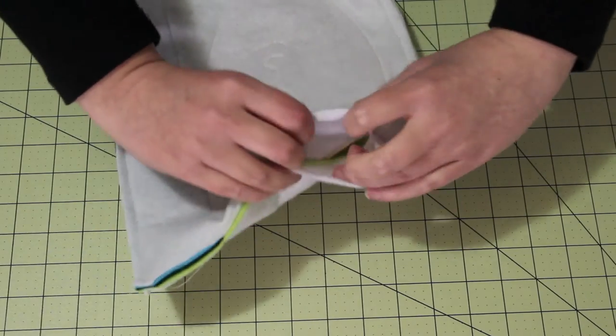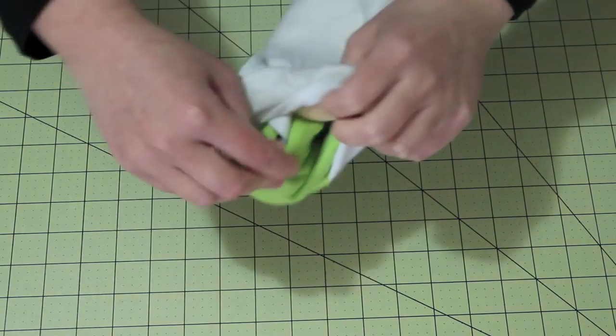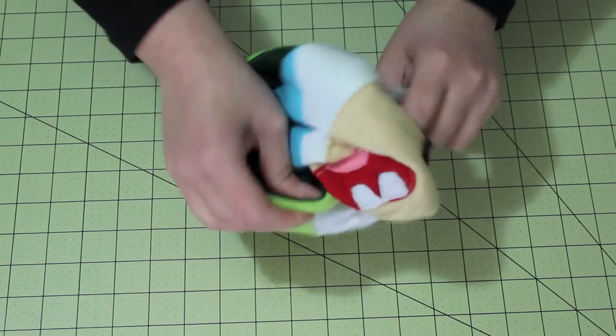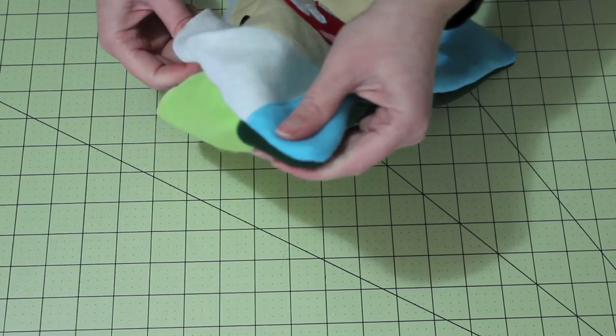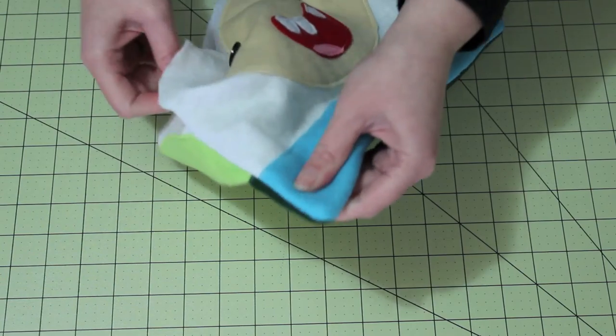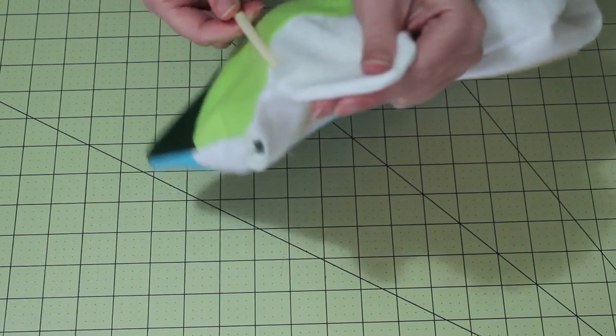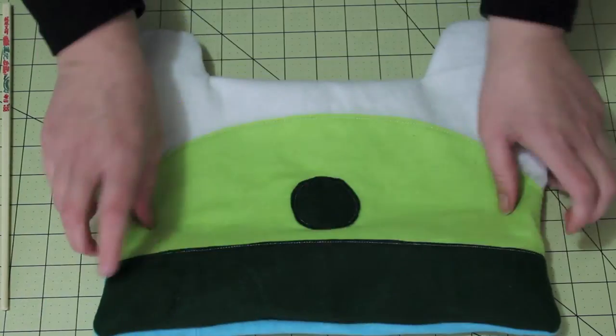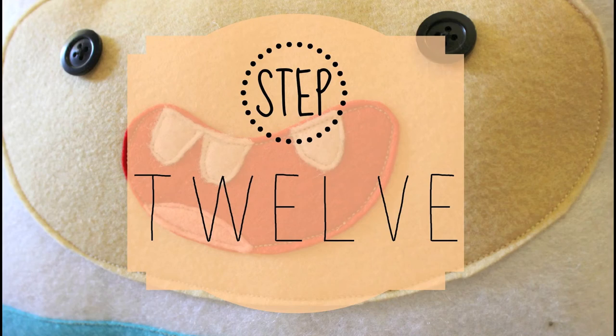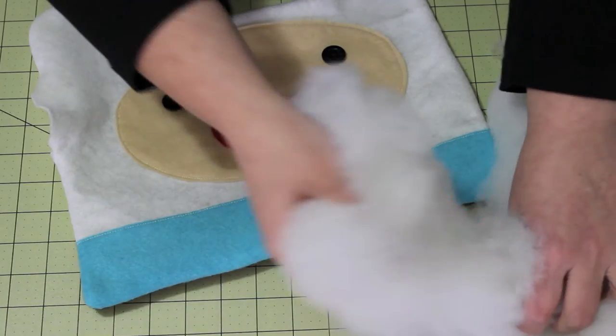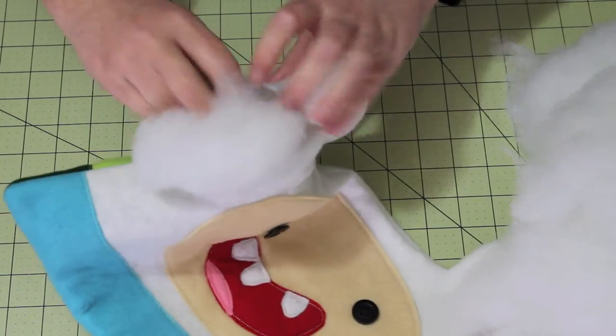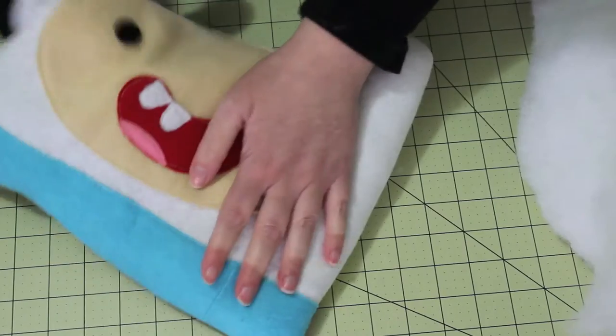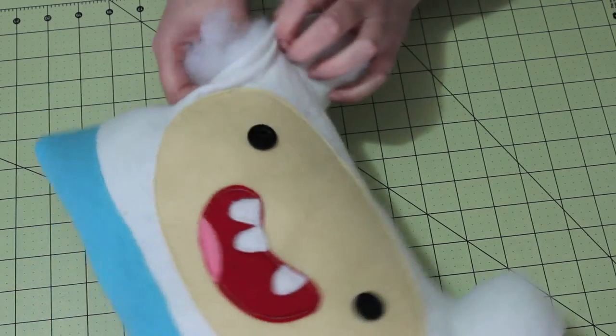Next, slowly pull the pillow inside out through the 10cm gap. Use a chopstick or pointing tool to open out the corners and curved seams. Once Finn is pulled out the right way, generously stuff him with polyester toy stuffing until he is your desired softness.